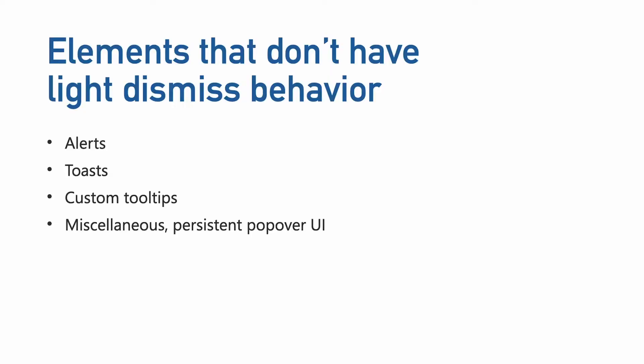Light dismiss behavior means the popup will be automatically hidden when the user either hits the escape key, the layout of the popup or its anchor element is changed, or focus moves outside of the popup. A generalized definition of light dismiss is currently being discussed in the Open UI standards group. Elements that don't have light dismiss behavior are things like alerts, toast, custom tooltips, and other miscellaneous persistent popover UI.